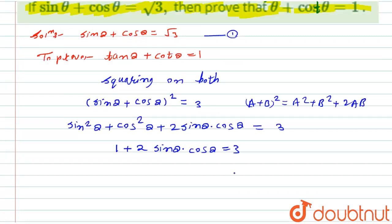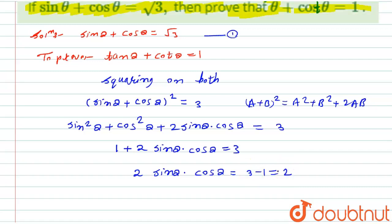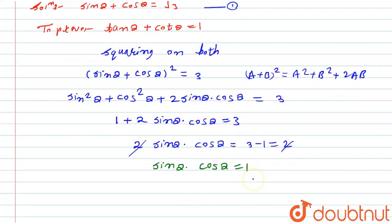Taking one to the other side, the expression becomes two sine theta into cos theta equals three minus one, which equals two. The two cancels, giving the new equation: sine theta into cos theta equals one.